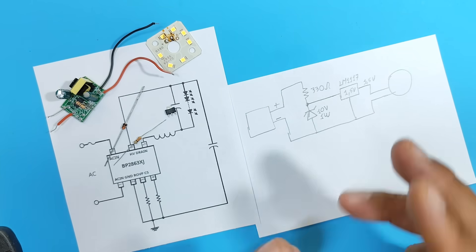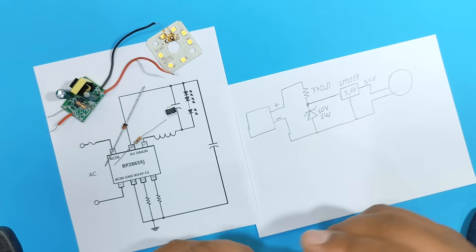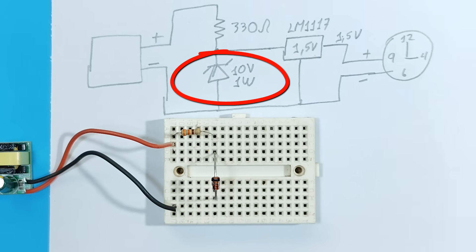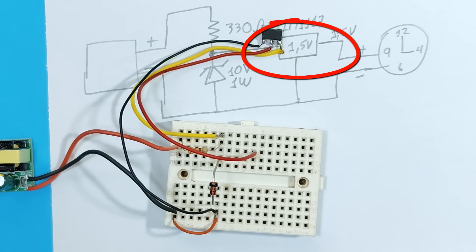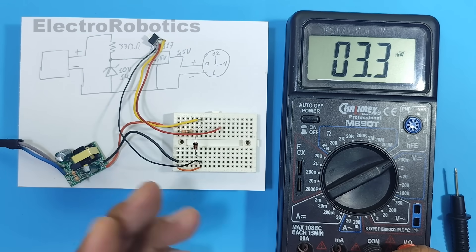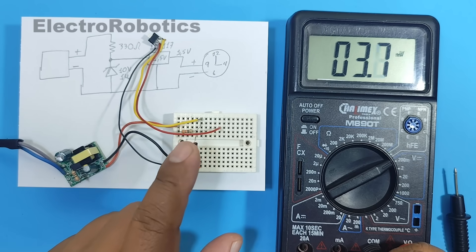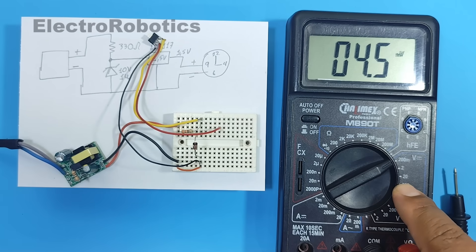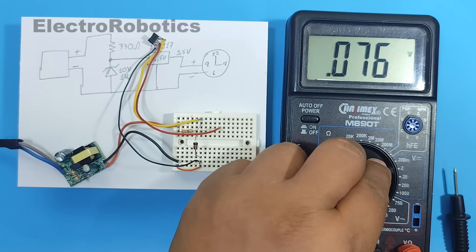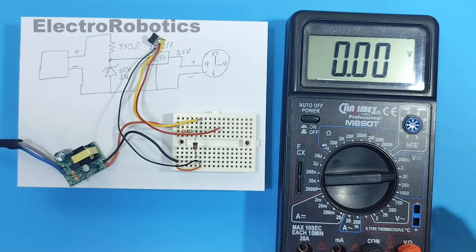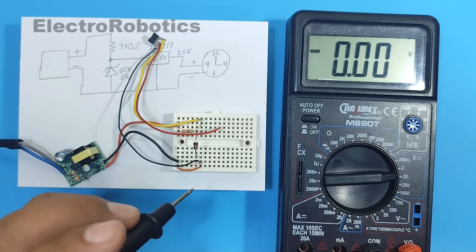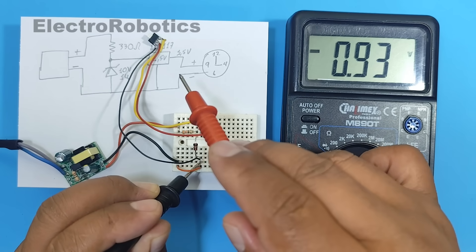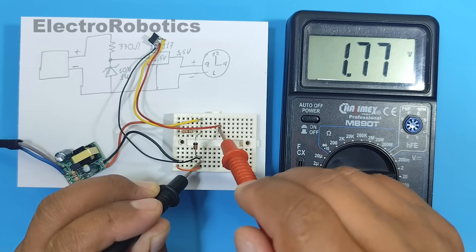Those would be the connections, but first let's run the tests on a breadboard. If the tests go well, we connect it to our wall clock. Now let's test the voltage our circuit delivers. We'll measure the voltage across the Zener diode and at the output of the voltage regulator. We put our multimeter in direct current voltage at a voltage greater than 10 volts. We power the electronics board and measure the Zener diode — and there we have 10.5 volts. Now we measure the voltage across the voltage regulator, and we have 1.8 volts.